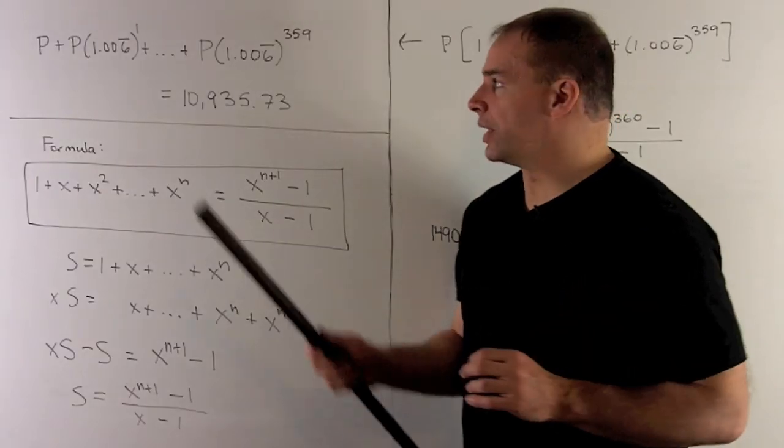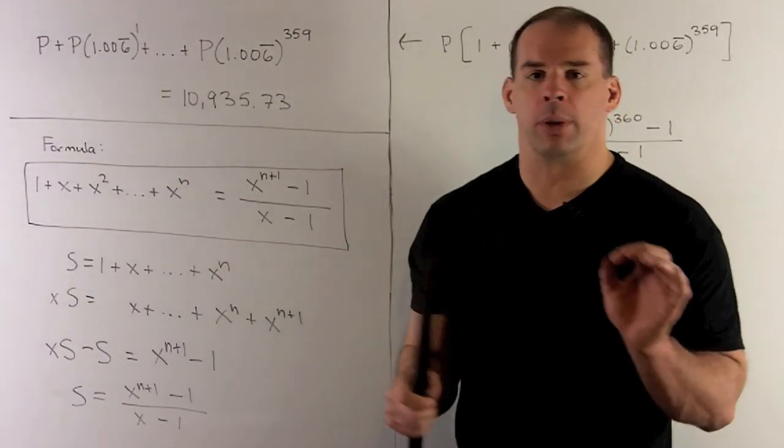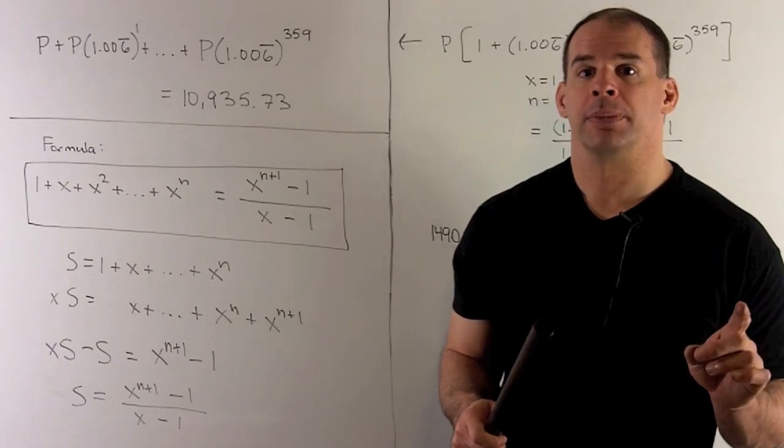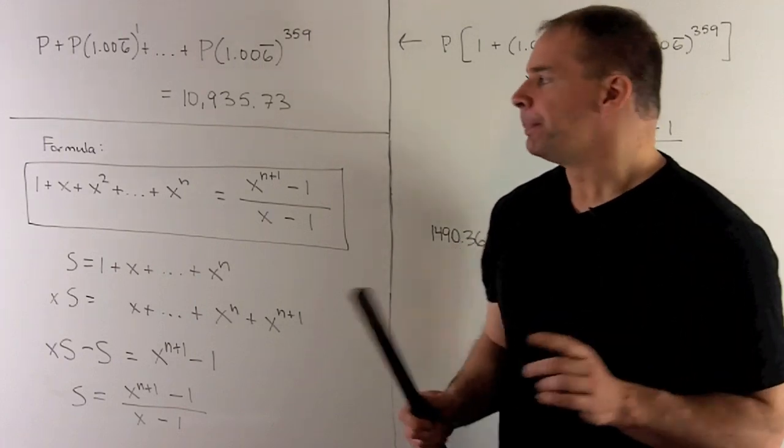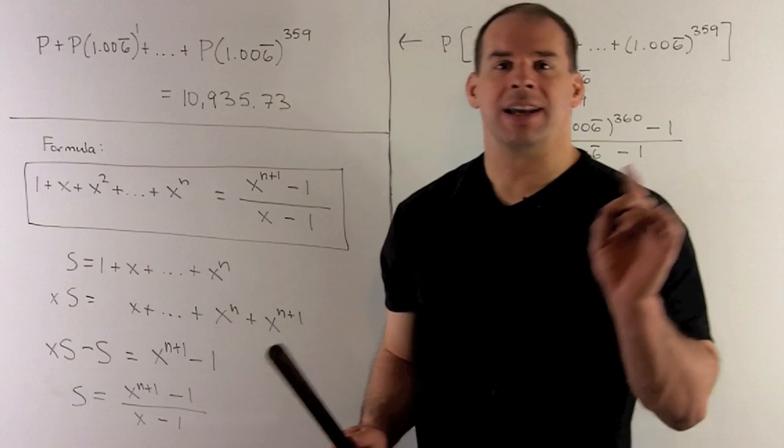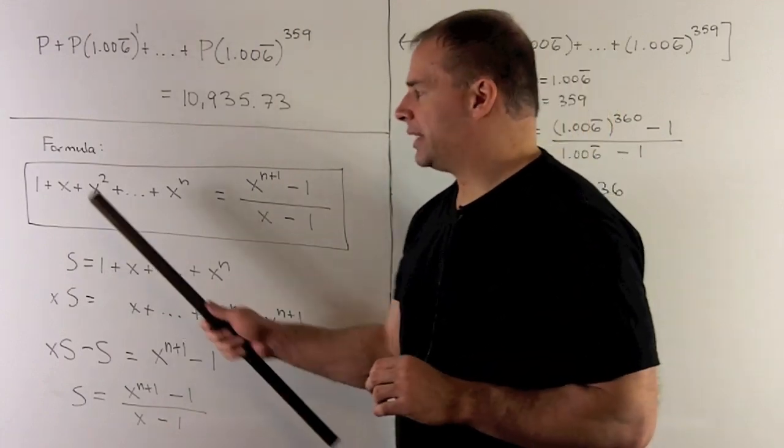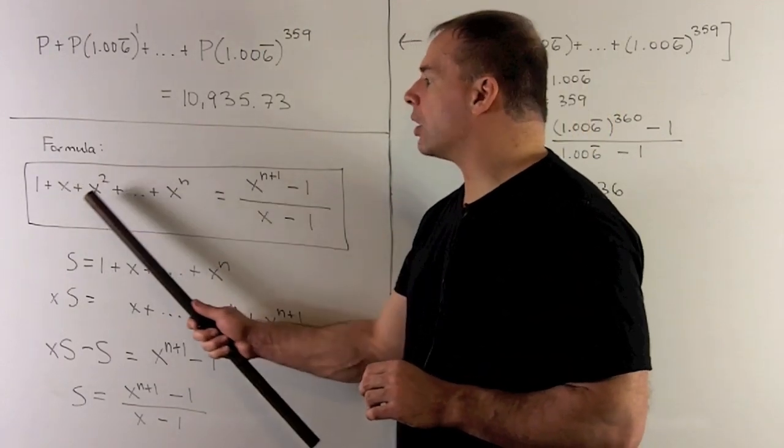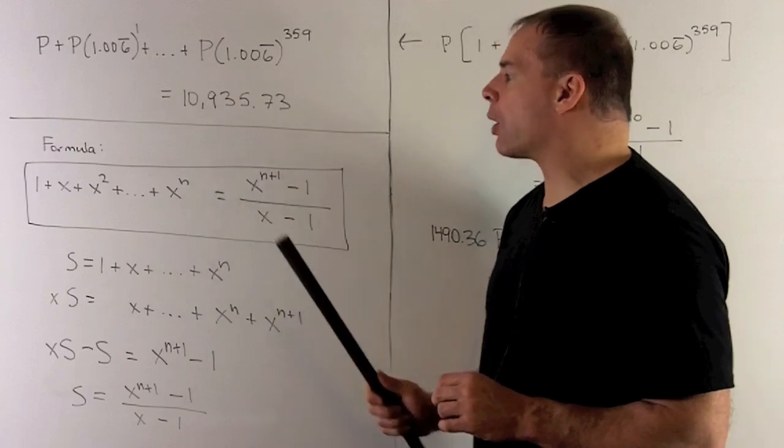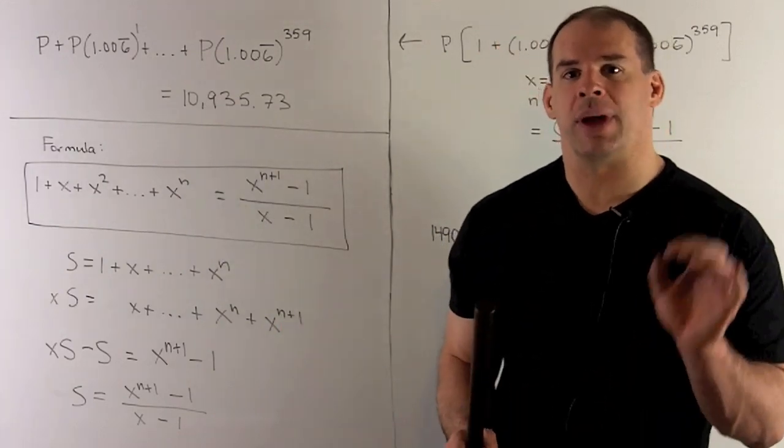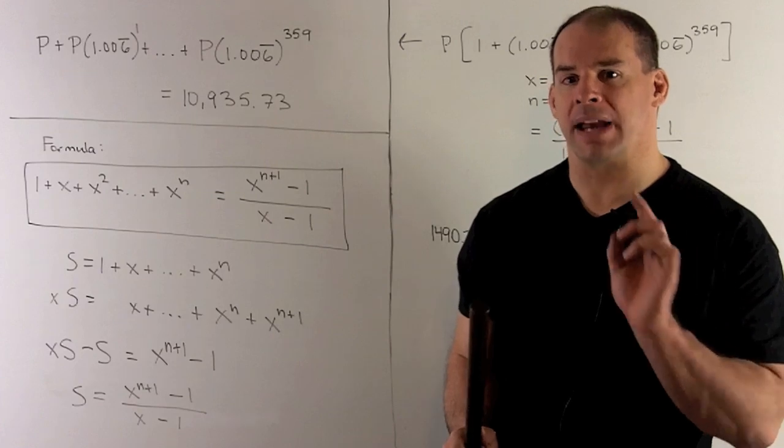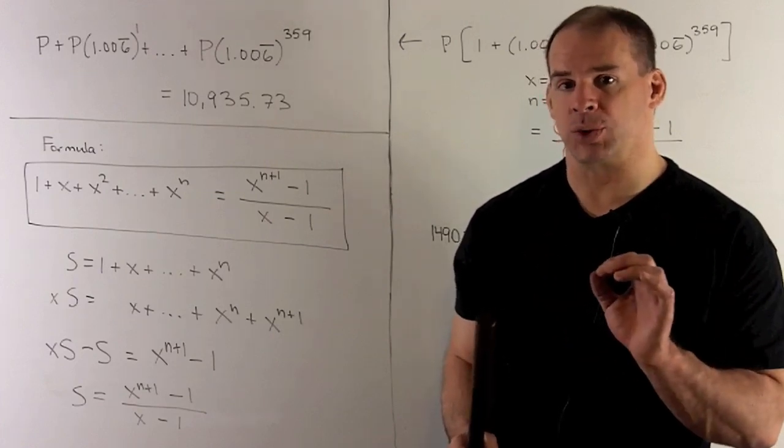Now, if we want to solve this equation, I'm first going to need a formula for a geometric sum. So the idea is going to be if I take any number not equal to 1, take 1 plus x plus x squared all the way up through x to the nth power.